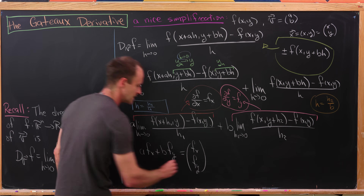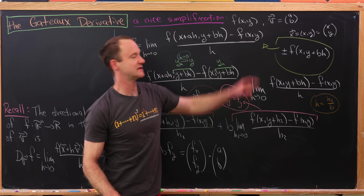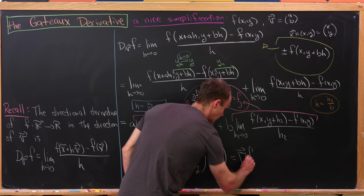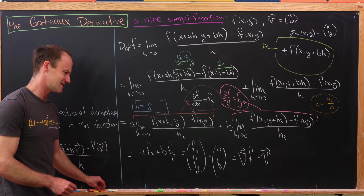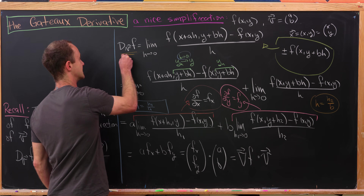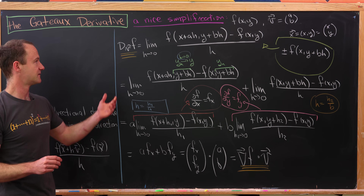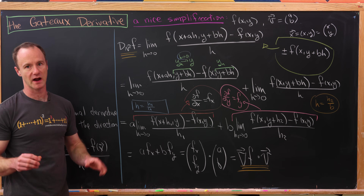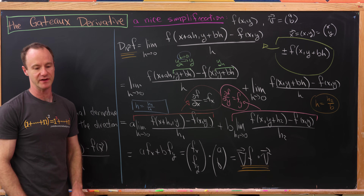The vector (fₓ, fᵧ) dot-producted with our direction vector (a, b) — where (a, b) is our vector v — has a name: this is the gradient of f dot-producted with the original vector. So if you're taking a multivariable calculus class, almost all of the time you can use this version: to take a directional derivative, just take the gradient and dot product it with the direction you're aiming to go in.